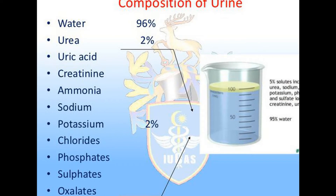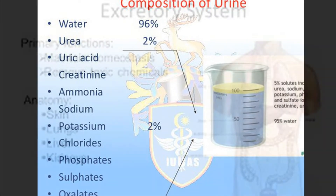Normal human urine mainly contains water, urea, uric acid and some amount of mineral salts.